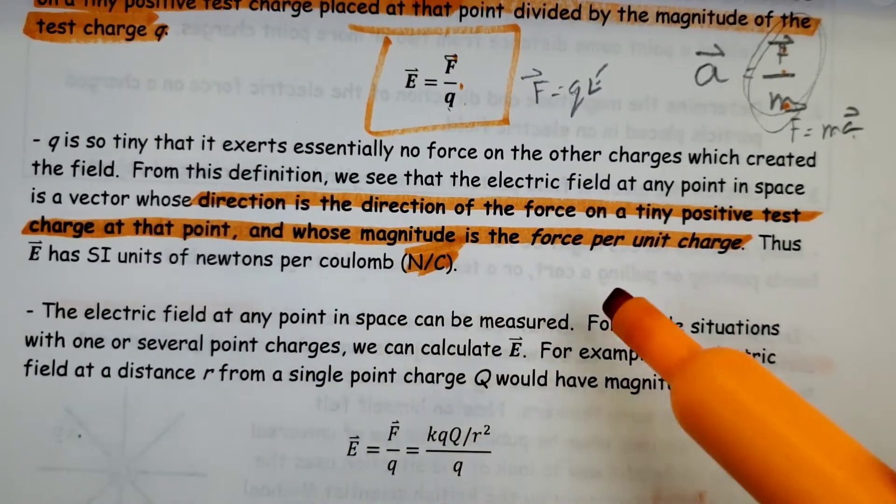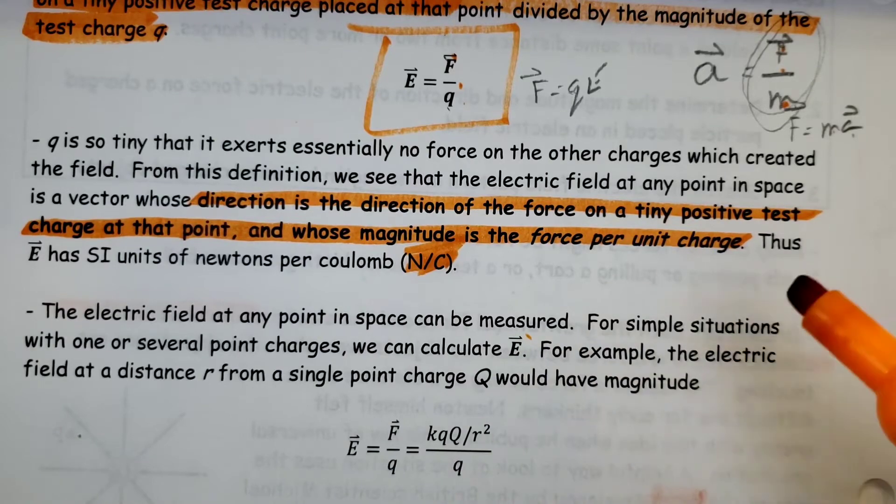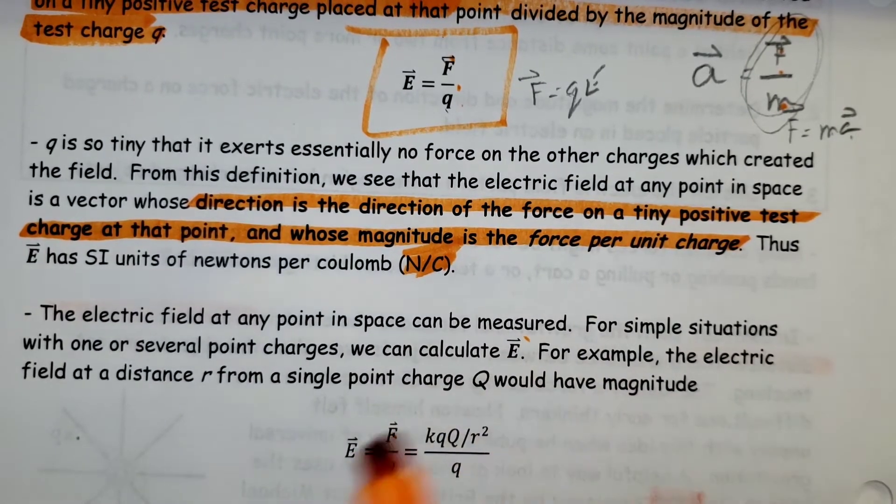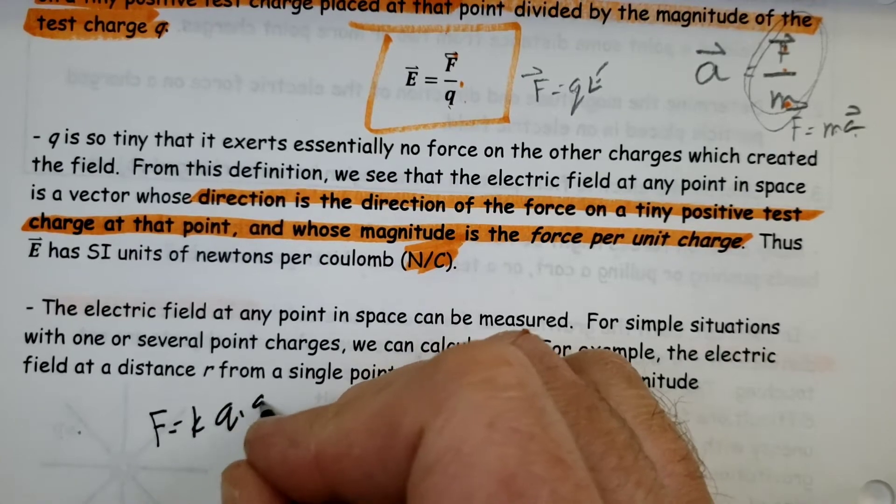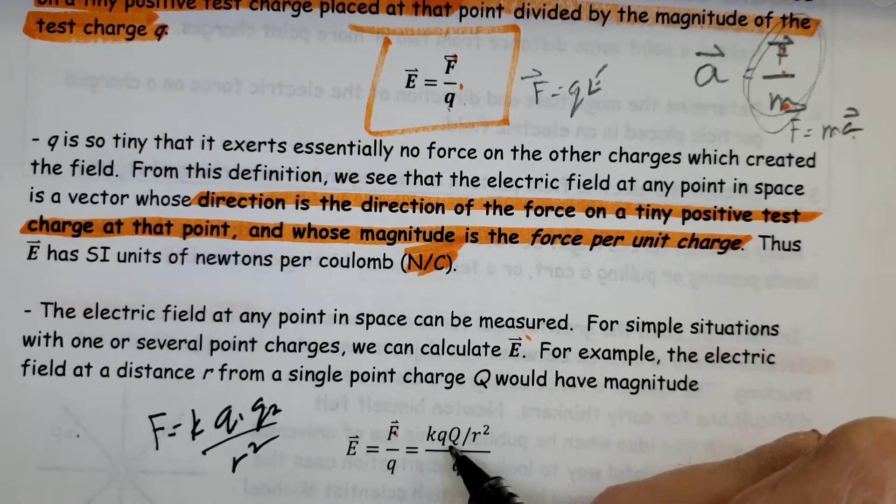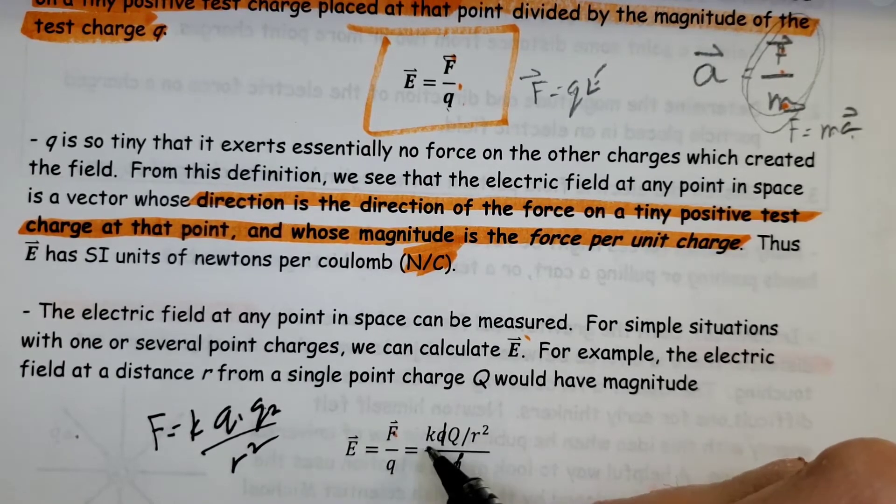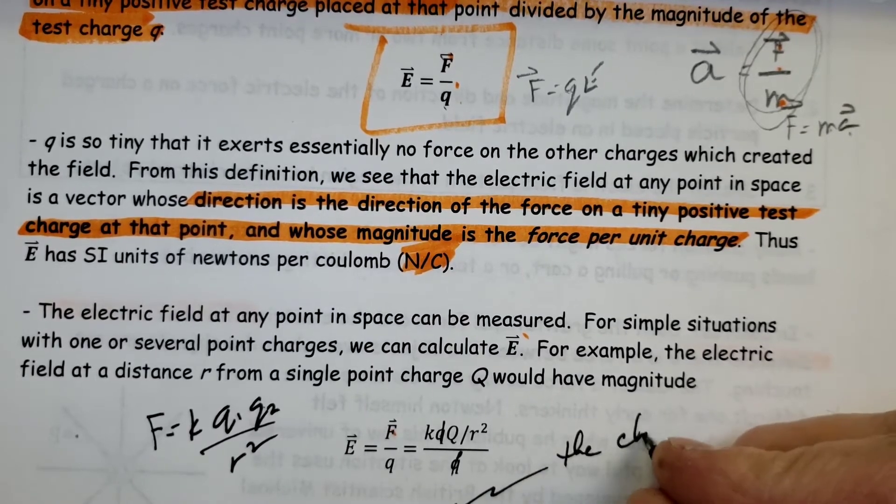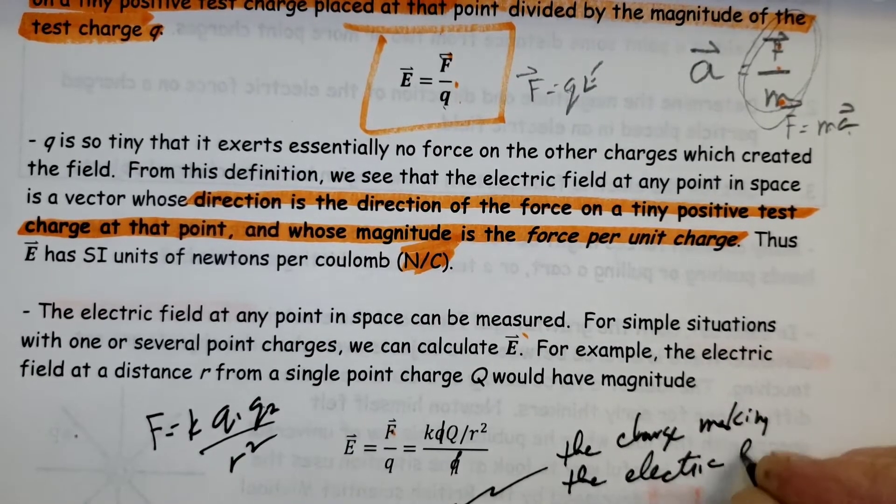The electric field at any point in space can be measured. For simple situations with one or several point charges, we can calculate E. For example, the electric field at a distance r from a single point charge would have magnitude. Force is F equals k Q1 times Q2 over r squared. This becomes E equals k times Q over r squared, where Q is the big charge making the electric field.